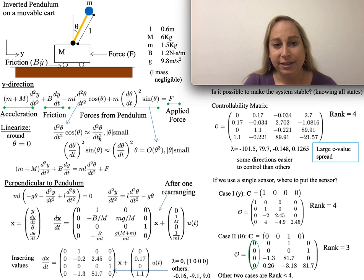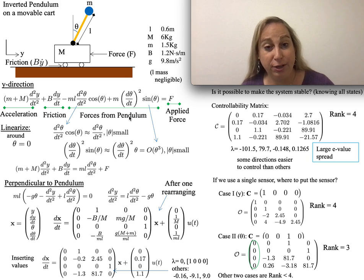For cosine theta, around theta equals zero, it's going to be one, so I just get the double derivative. For sine theta, that's approximately theta, and theta times a squared term gives a cubic term.